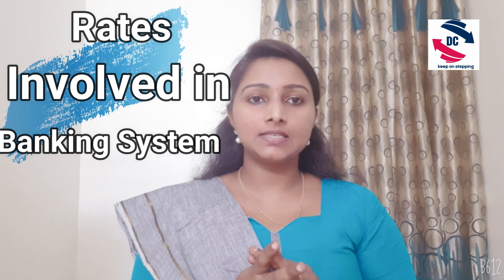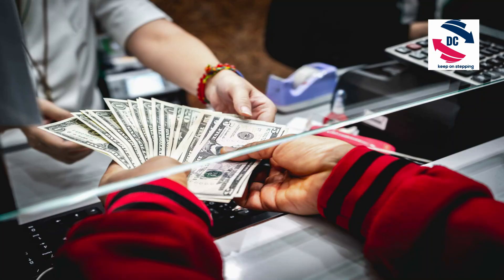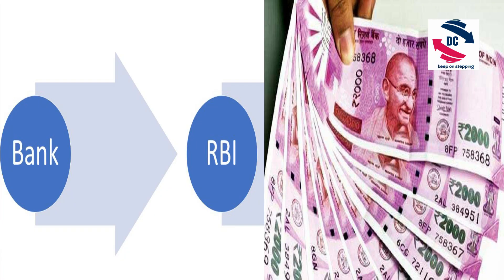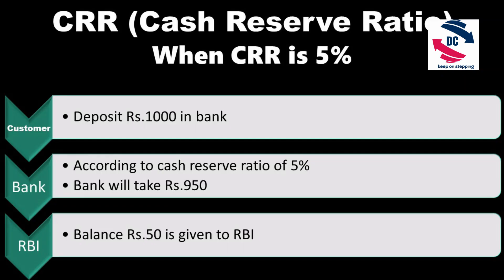Now let's understand the rates involved in the banking system. We have RBI, then commercial banks, and then customers. Customers deposit money in the bank, but not all of the amount goes to the bank's wallet — the bank must give some amount to RBI. This amount is decided by CRR, that is Cash Reserve Ratio. For example, if CRR is 5%, and the customer deposits ₹1000, then ₹50 goes to RBI and the remaining goes to the bank.